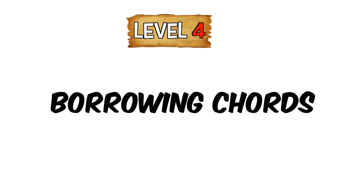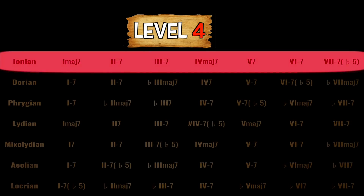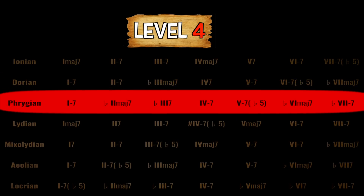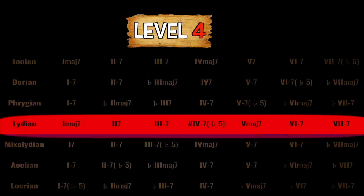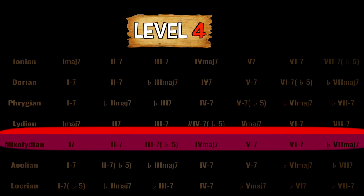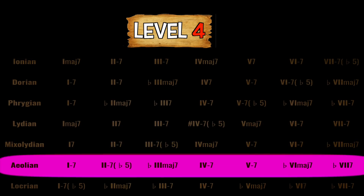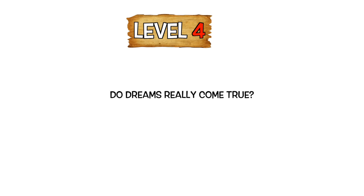In level 4 we will explore the idea of borrowing chords. We have mainly stayed with the diatonic chords in C major known as the Ionian mode, but we can borrow chords that are derived from the other modes in C — that is known as modal interchange. I often use borrowed chords when I want to give an arrangement a darker feel; it makes everything feel more uncertain and unknown. Do dreams really come true?